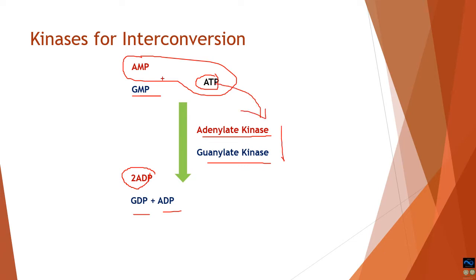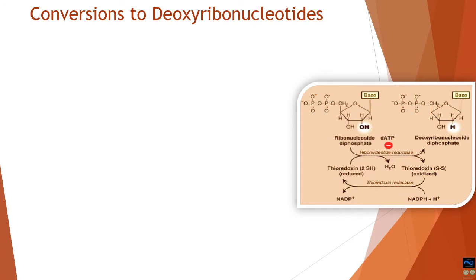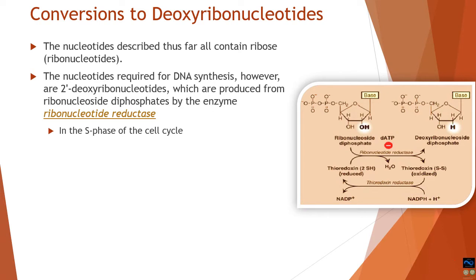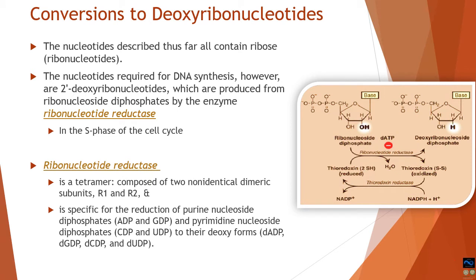When we synthesize mononucleosides, we synthesize ribonucleotides. These ribonucleotides need to be converted into the deoxy type so that cells can synthesize DNA. This conversion is brought about by ribonucleotide reductase, which operates during the S phase of the cell cycle — the phase where DNA synthesis takes place. Ribonucleotide reductase is a tetramer containing two non-identical dimeric units, R1 and R2, each present twice.